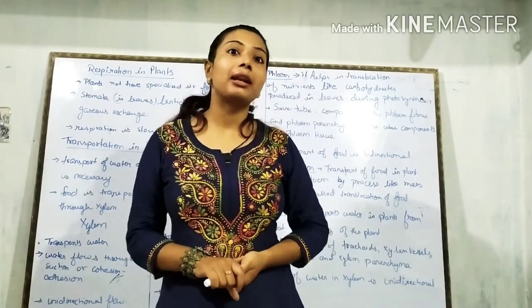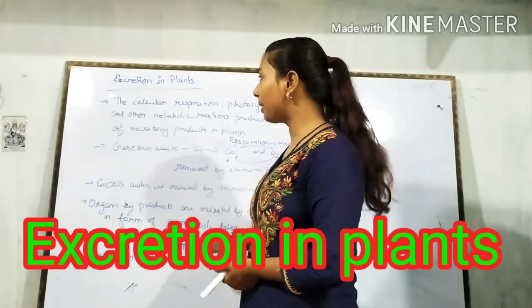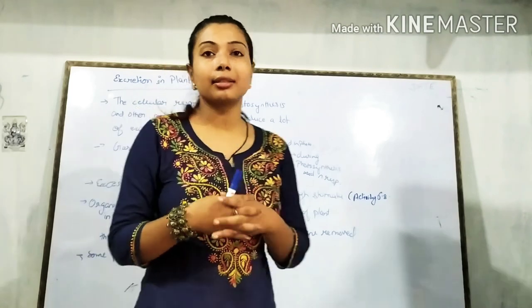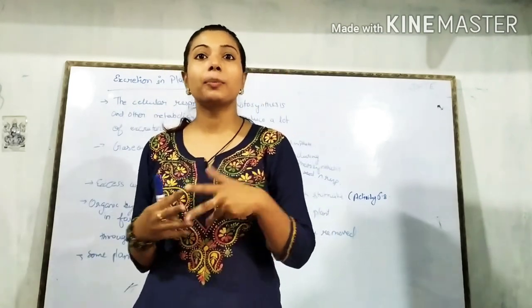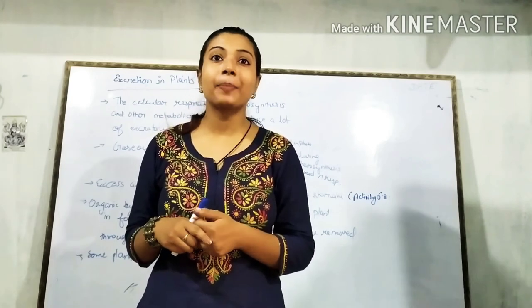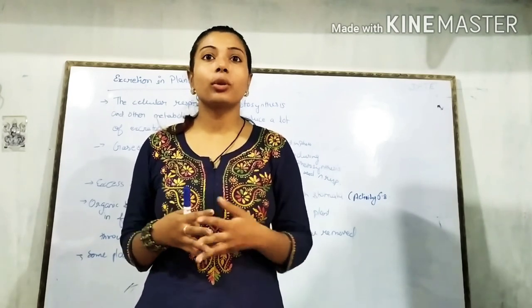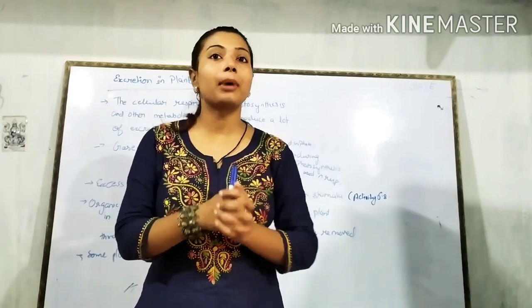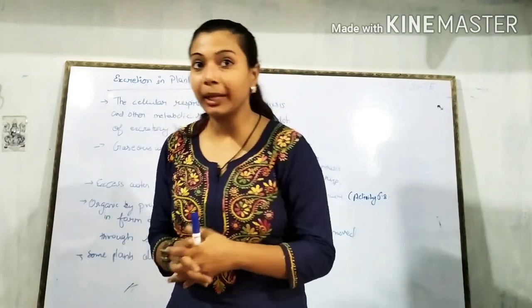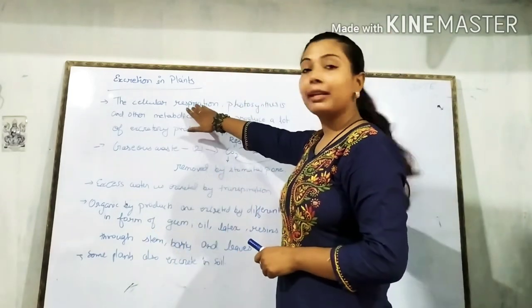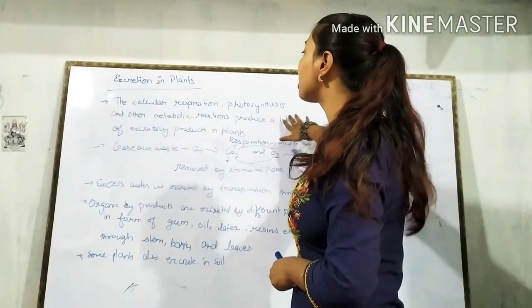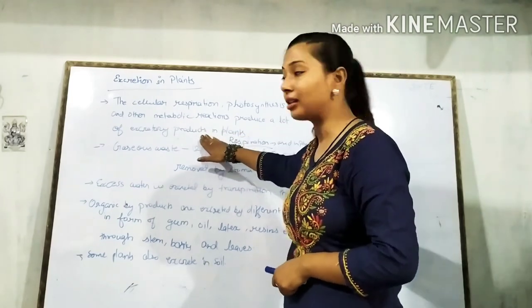Now we will learn about excretion in plants. Excretion in plants is also necessary because plants also have many metabolic processes like respiration and photosynthesis, during which many excretory waste products are produced that must be removed from the body. Cellular respiration, photosynthesis, and other metabolic reactions produce a lot of excretory products in plants.